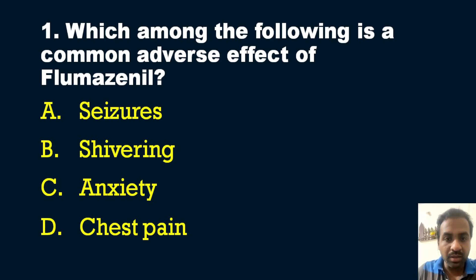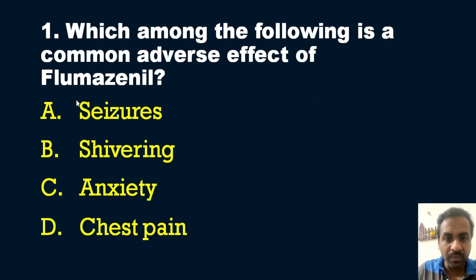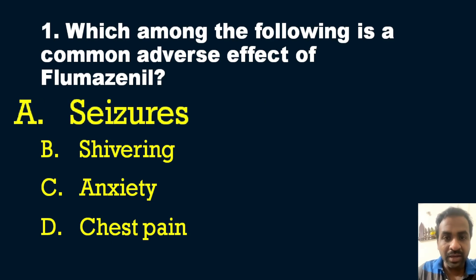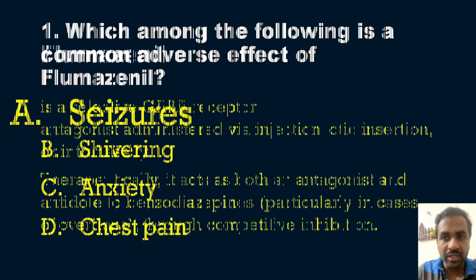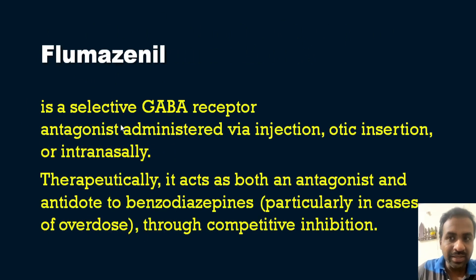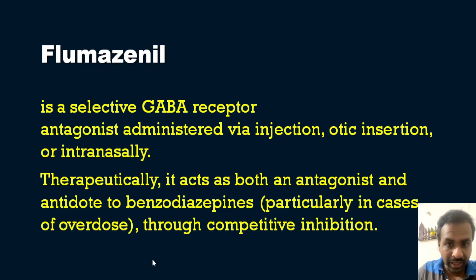In NIMHANS examinations, you can expect pharmacology and psychopharmacology questions — many such questions have appeared in previous examinations. Flumazenil is the antidote of benzodiazepines. The answer for this question is option A — seizures. Flumazenil is a selective GABA receptor antagonist, which is administered via injection, tick insertion, or intranasally. Therapeutically, it acts as both an antagonist and antidote to benzodiazepines, particularly in the case of overdose, through competitive inhibition.